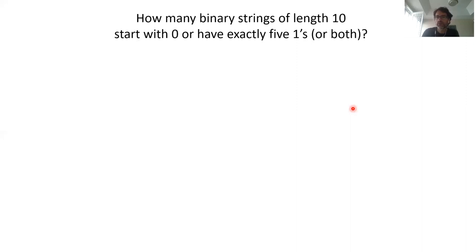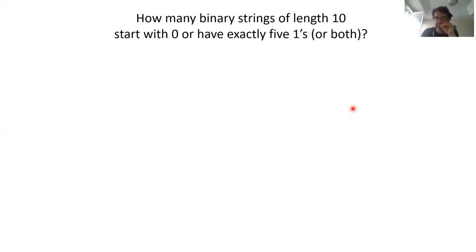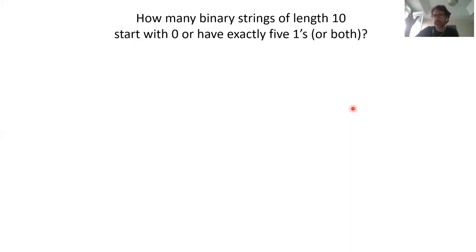For more sets, the signs alternate. With four sets: add individual cardinalities, subtract pairwise, add three-way, subtract four-way. For five sets and beyond, you continue adding then subtracting K-wise intersections, taking the next (K+1)-way intersections with the opposite sign.